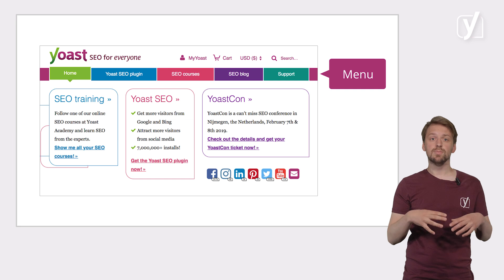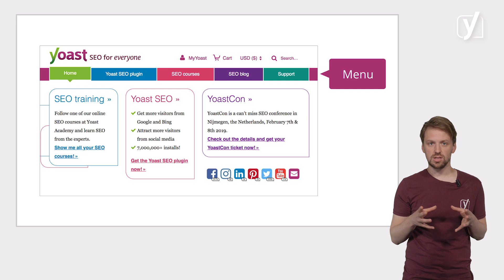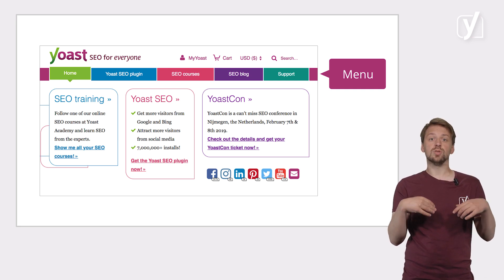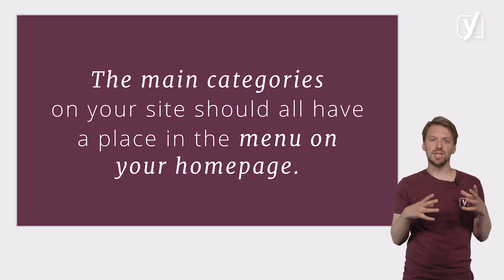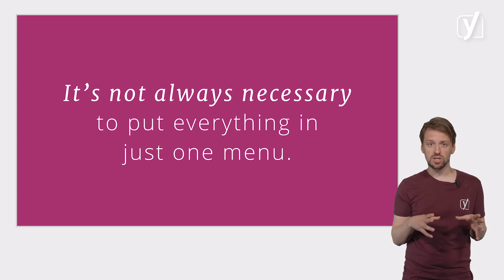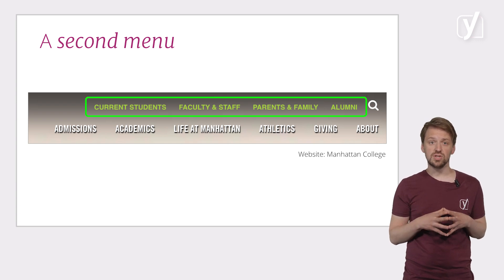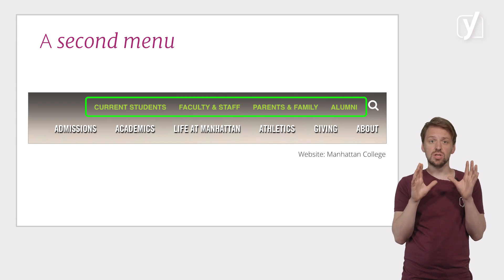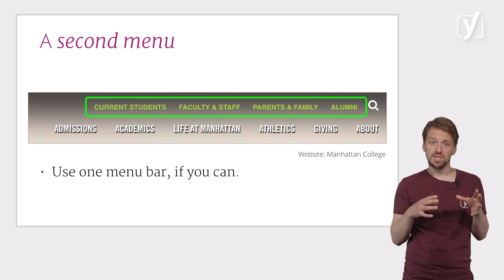In addition to having a well-structured homepage, it's also important to create a clear navigation path on your entire site. Your site-wide navigation consists of two main elements: the menu and the breadcrumbs. First of all, the menu. The website menu is the most common aid for navigation on your website, and you want to make the best possible use of it. Visitors use your menu to find things on your website. It helps them understand the structure of your site, and that's why the main categories on your site should all have a place in the menu. Furthermore, it's not always necessary to put everything in just one menu. If you have a big site with lots of categories, this may clutter your website. Where it makes sense, it's perfectly fine to create a second menu, like the one the Manhattan College site uses. On this site, the second menu links to pages aimed at specific audiences. But be careful — if there's no specific reason to implement a second menu, one menu bar is better. It maintains clarity and focus. And just like on your homepage, don't add too many links to your menu.